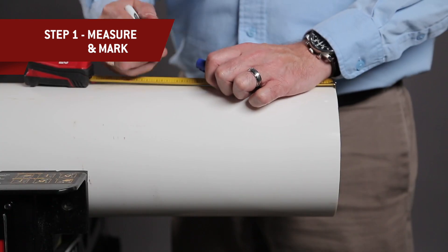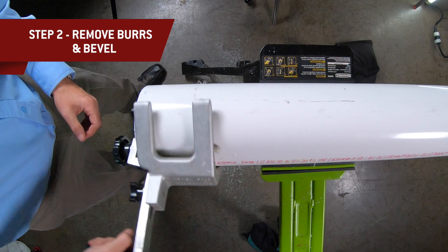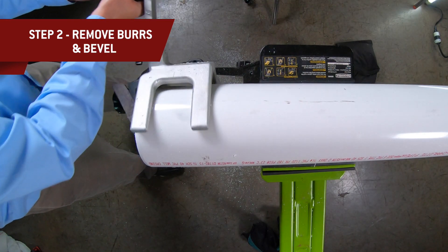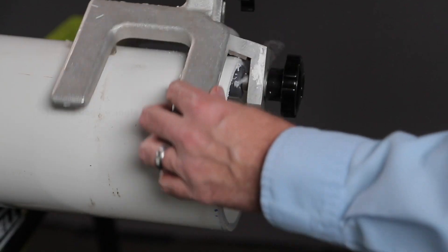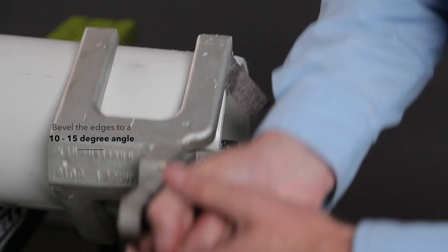Measure and mark the required length of pipe. Remove all burrs from the inside and the outside of the pipe with a deburring tool. Bevel the edges to a 10 to 15 degree angle.